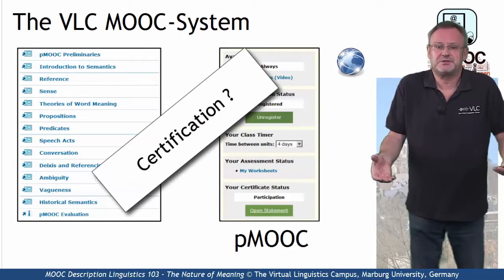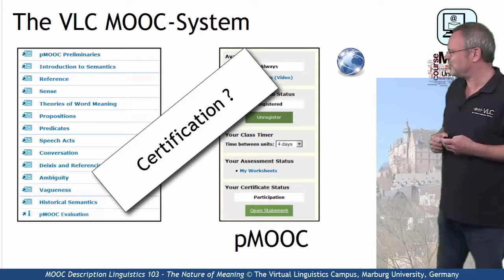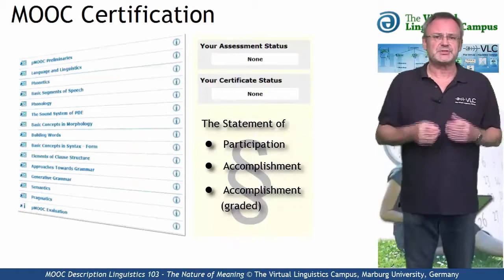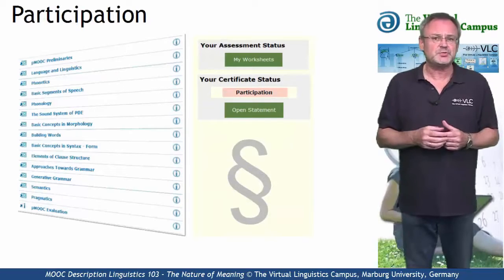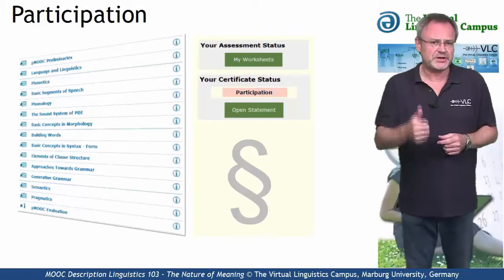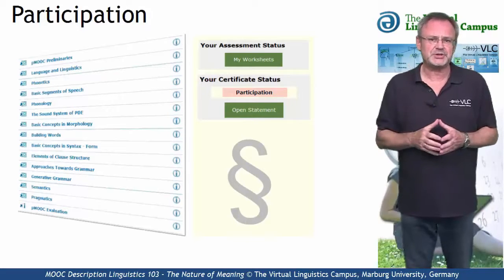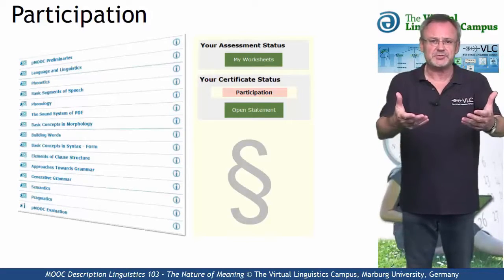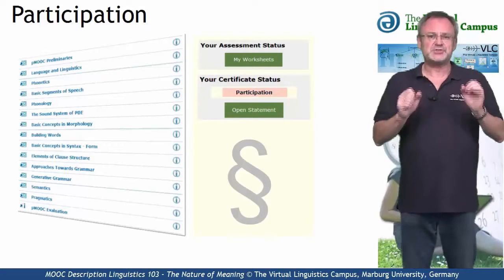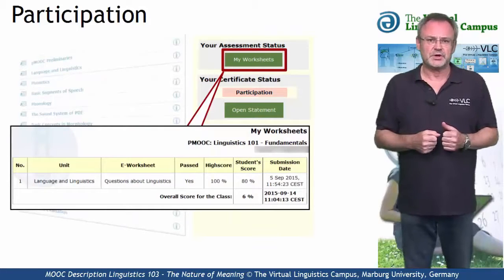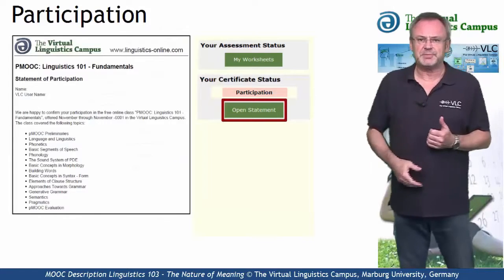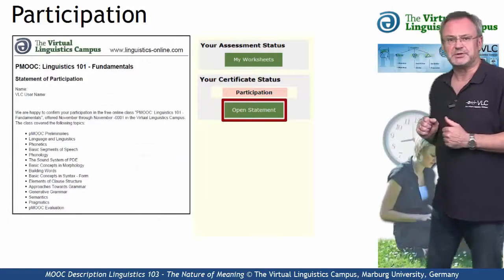And if you want a certificate, here are your options. The simplest option is the statement of participation issued by the Virtual Linguistics Campus. You will receive such a certificate for regular and active participation, including the submission of at least one worksheet, and for free. Once you have successfully submitted a worksheet, you will be eligible for such a certificate and can open it by hitting the open statement button.